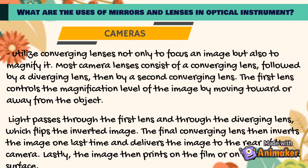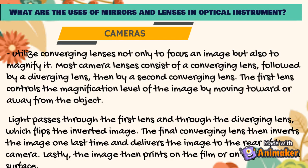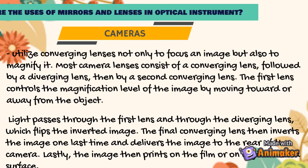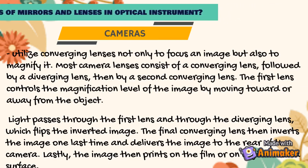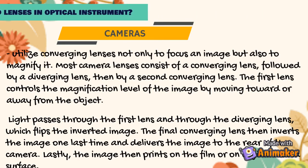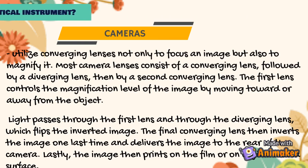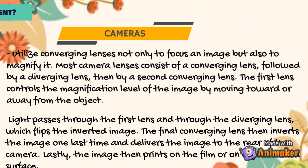Then we have cameras. These utilize converging lenses not only to focus on an image but also to magnify it. Most camera lenses consist of a converging lens followed by a diverging lens, then by a second converging lens. The first lens controls the magnification level by moving toward or away from the object. Light passes through the first lens and through the diverging lens, which flips the inverted image. The final converging lens inverts the image one last time and delivers it to the rear of the camera, where it prints on film or on a digital media surface.